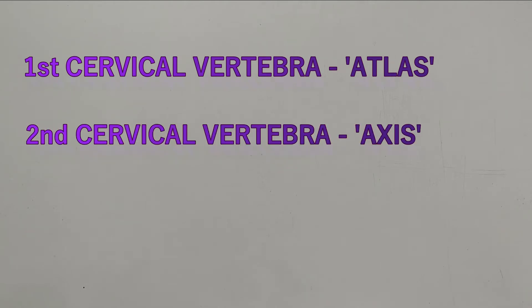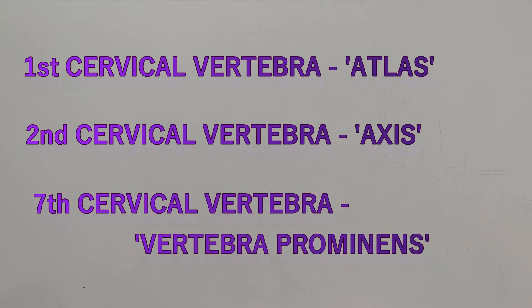The 1st cervical vertebra is named as the atlas, the 2nd cervical vertebra is named as the axis, and the 7th cervical vertebra is called the vertebra prominens.